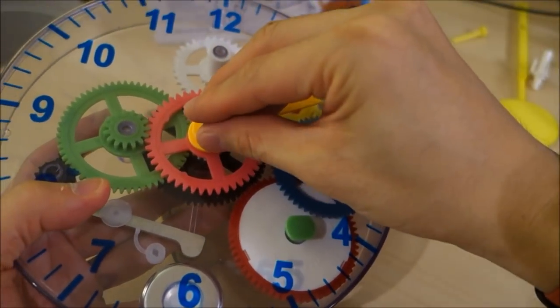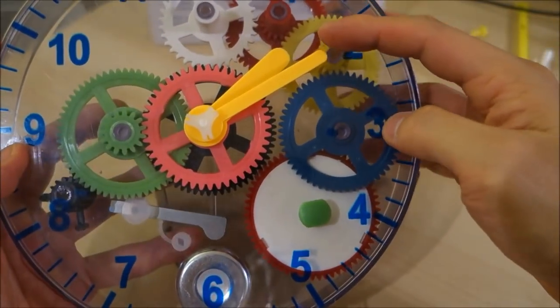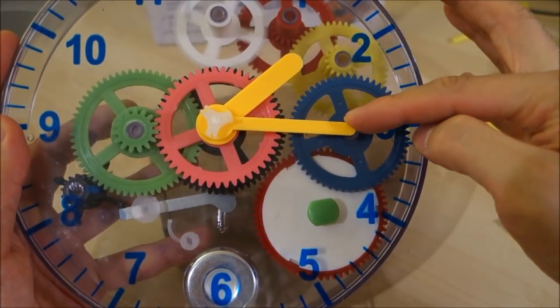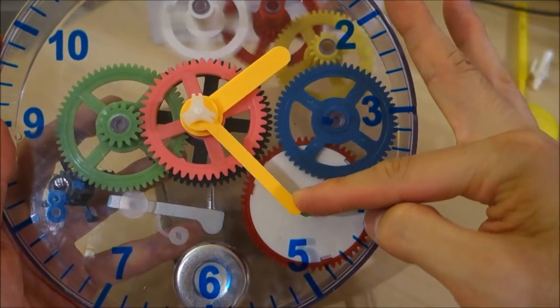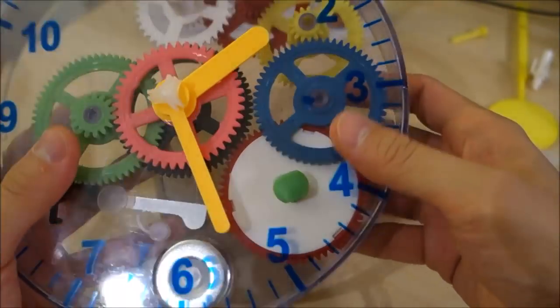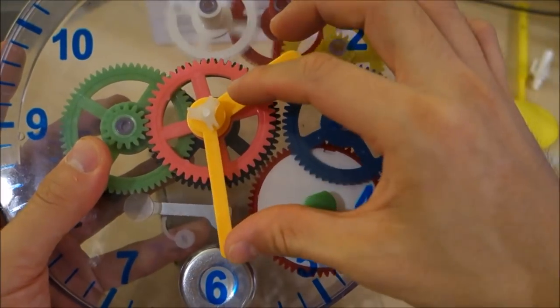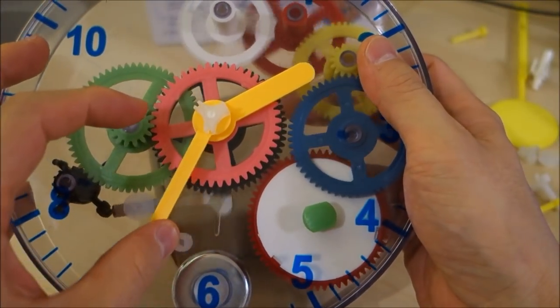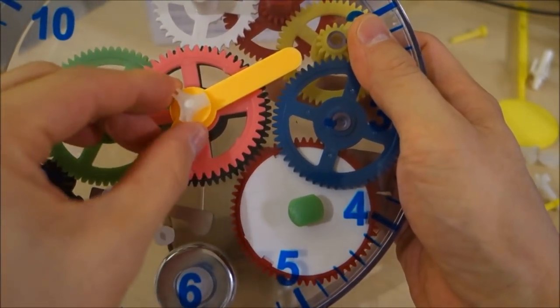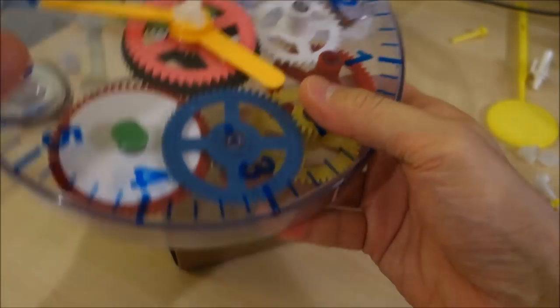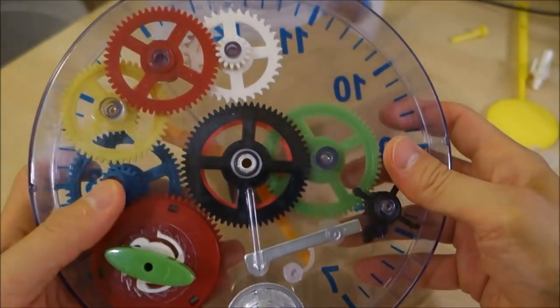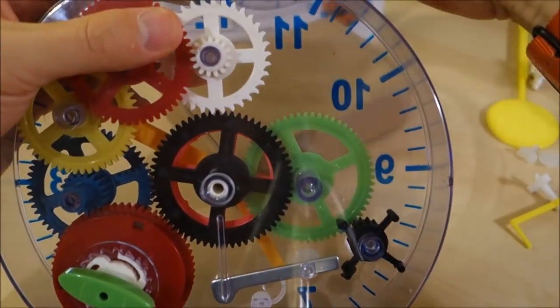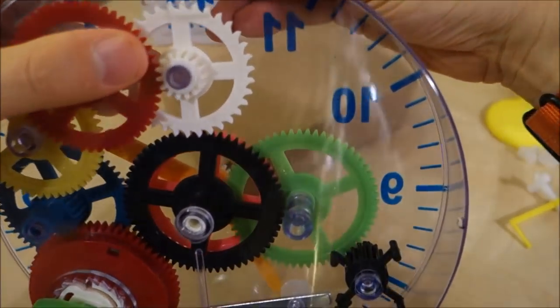Put that cover on top. Again, that slip mechanism in the central spindle allows me to adjust the time. Right now it's not escaping at all, the escape wheel is being freely spun here. But if it was being stopped by the pendulum, this allows me to adjust the time independently. Let's go ahead and assemble the last bit here.